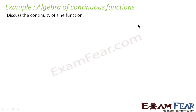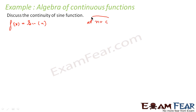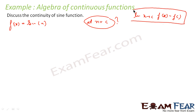Let us discuss the continuity of the sine function. We know f(x) equal to sin x. To determine whether it is continuous or not, let us take any general point c and find the continuity at point c. If we can prove that the limit of f(x) as x tends to c equals f(c), then the sine function is a continuous function. Let us try to find this limit.